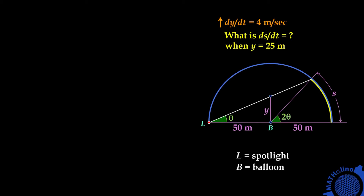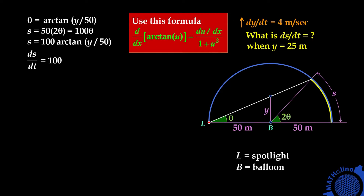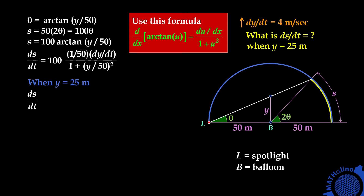Tangent theta equals opposite y over 50. Therefore theta is arctangent of y over 50. The length of arc S equals radius times the central angle, so S equals 50 times 2 theta, which equals 100 theta. Therefore S equals 100 times arctangent of y over 50. We are required to find dS over dt, using the formula for the derivative of arctangent of u. Our u equals y over 50, and its derivative with respect to time is (1/50) times dy over dt, all over 1 plus u squared. When y equals 25: dS over dt equals 100 times (1/50) times dy over dt — which equals 4 — all over 1 plus (25/50) squared. We get an answer of 6.4 meters per second.